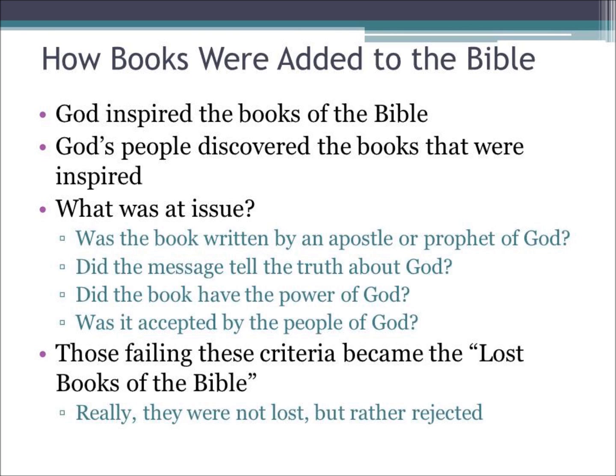How did they determine if a book should be included or not? Was the book written by an apostle or a prophet of God? That was one of the questions the church asked. Second, did the message tell the truth about God? Third, did the book have the power of God? When we read the Bible, we're not just simply reading a piece of literature — it has the power of God behind it. Was it accepted by the people of God? Those failing these criteria became the lost books of the Bible — really, they weren't lost, but rather rejected by the early church.